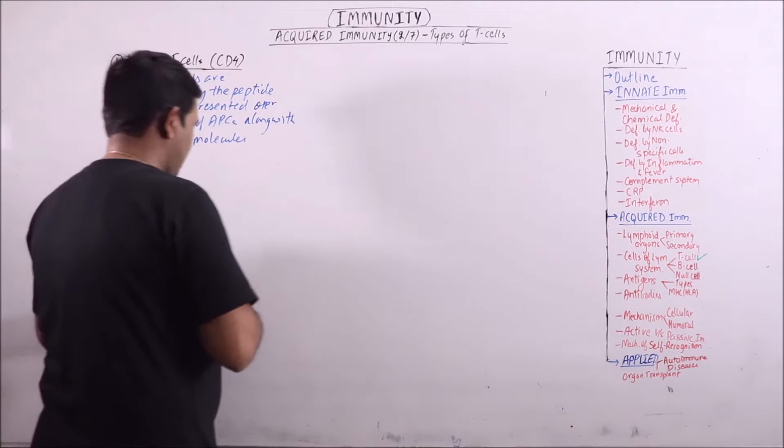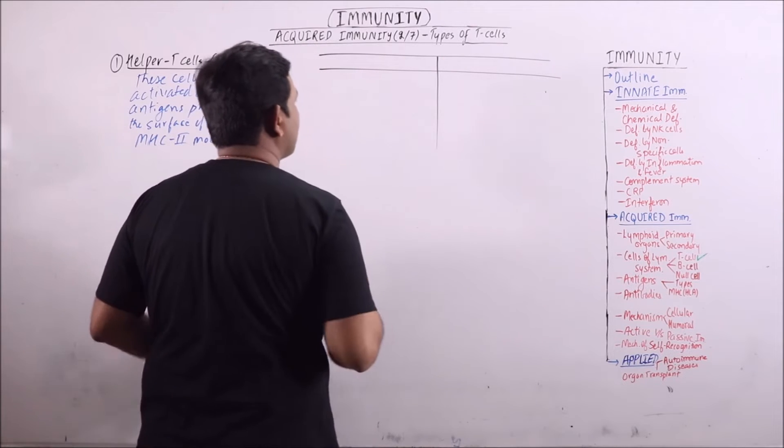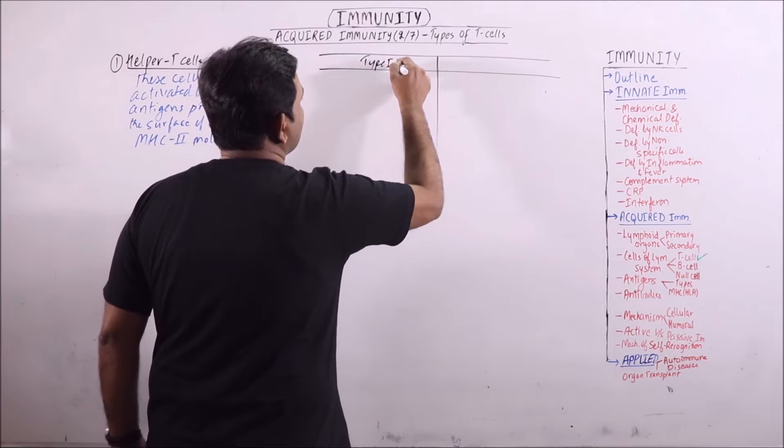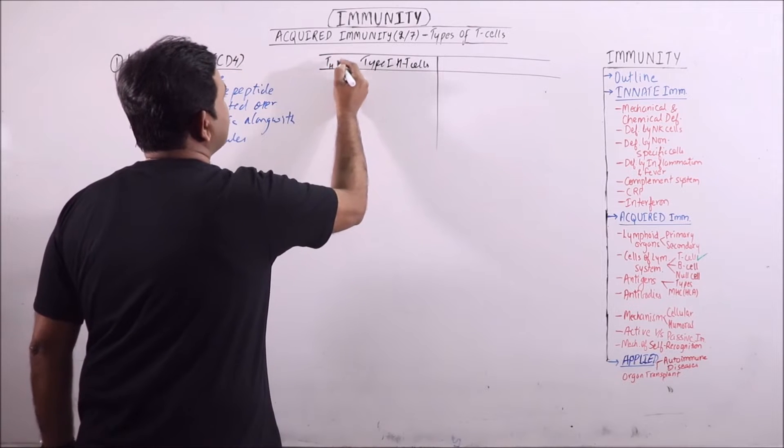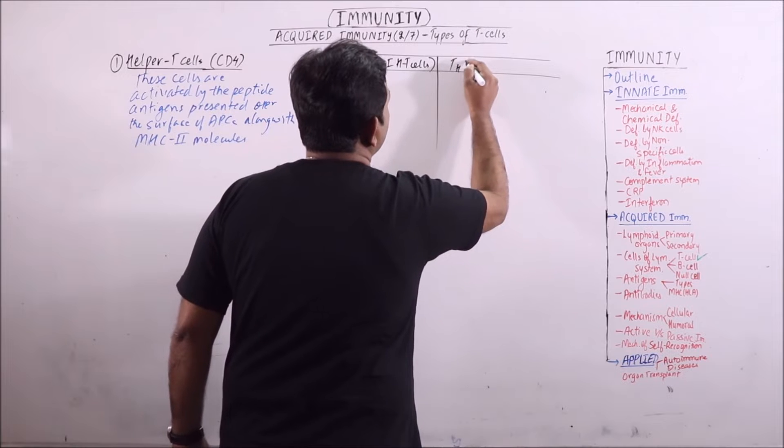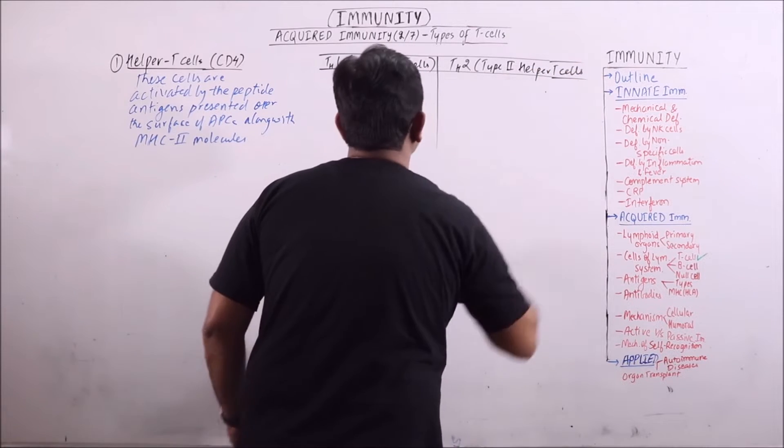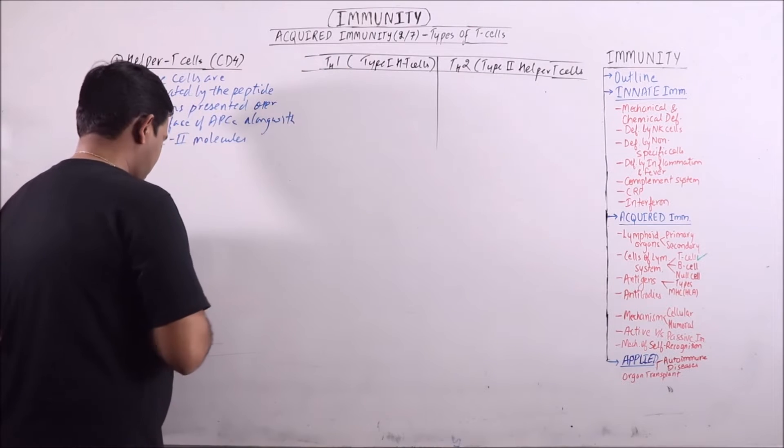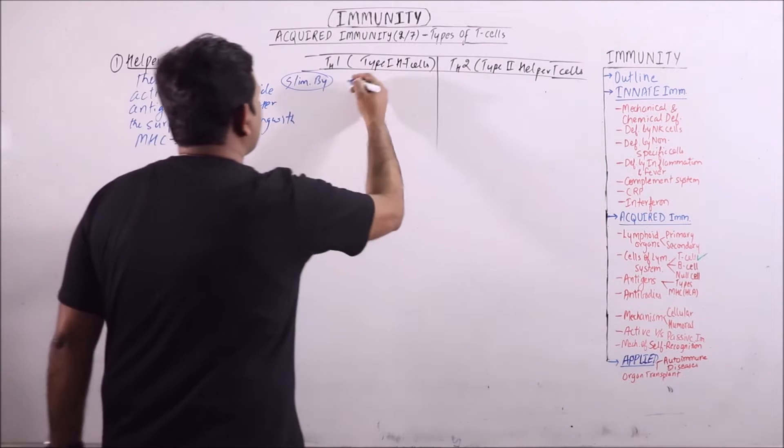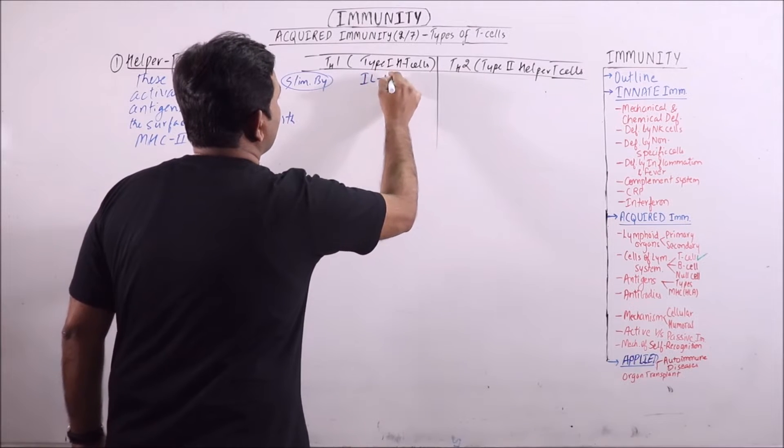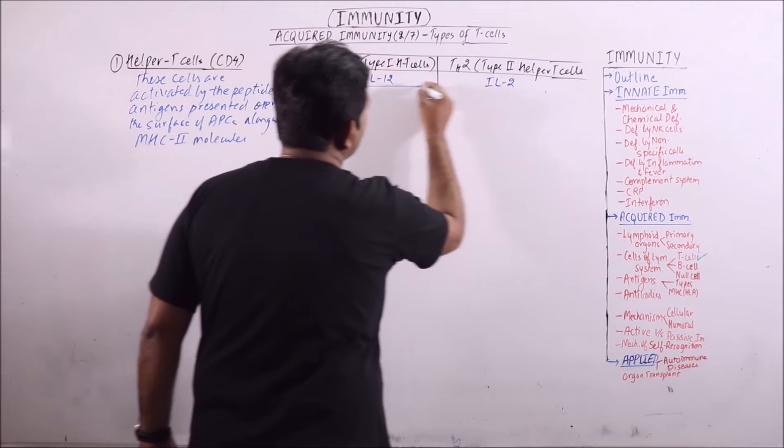These helper T-cells are of two types: Type I helper T-cells which are designated as Th1, and Th2 that is type II helper T-cells. Type I helper T-cells are stimulated by interleukin-12, while type II are stimulated by interleukin-2.